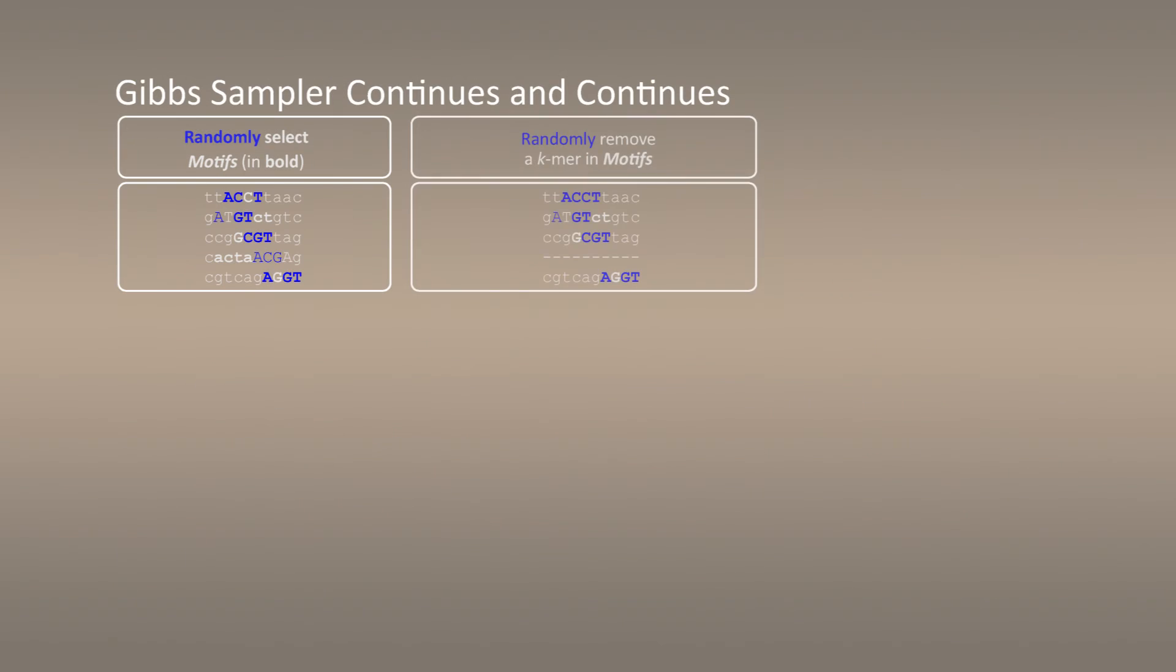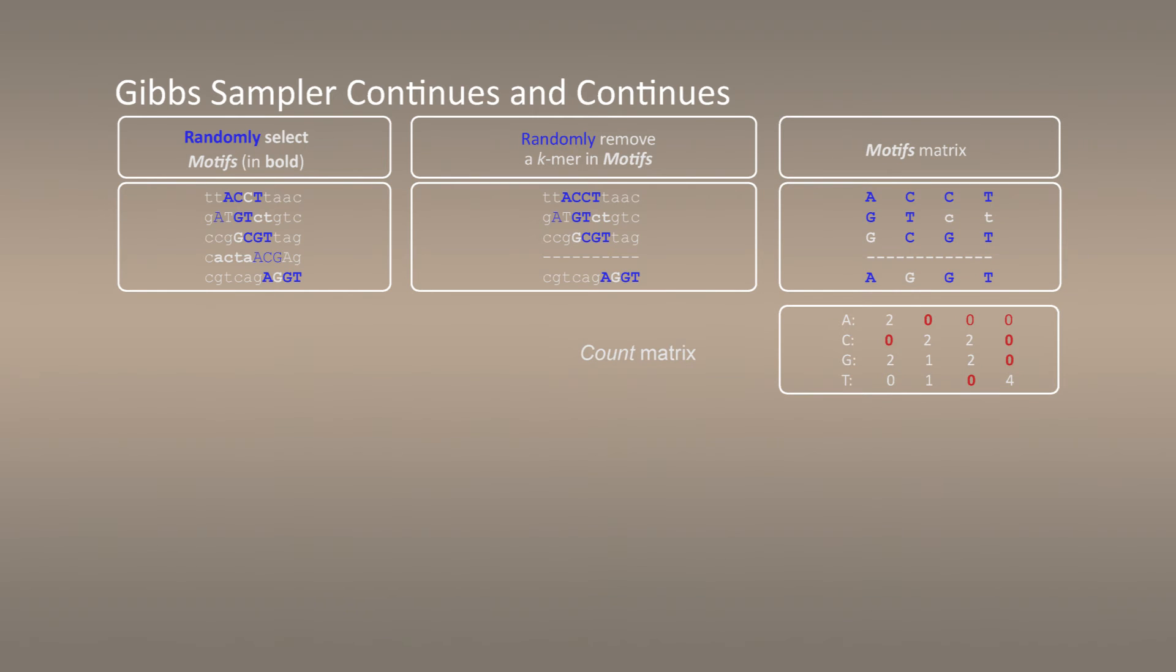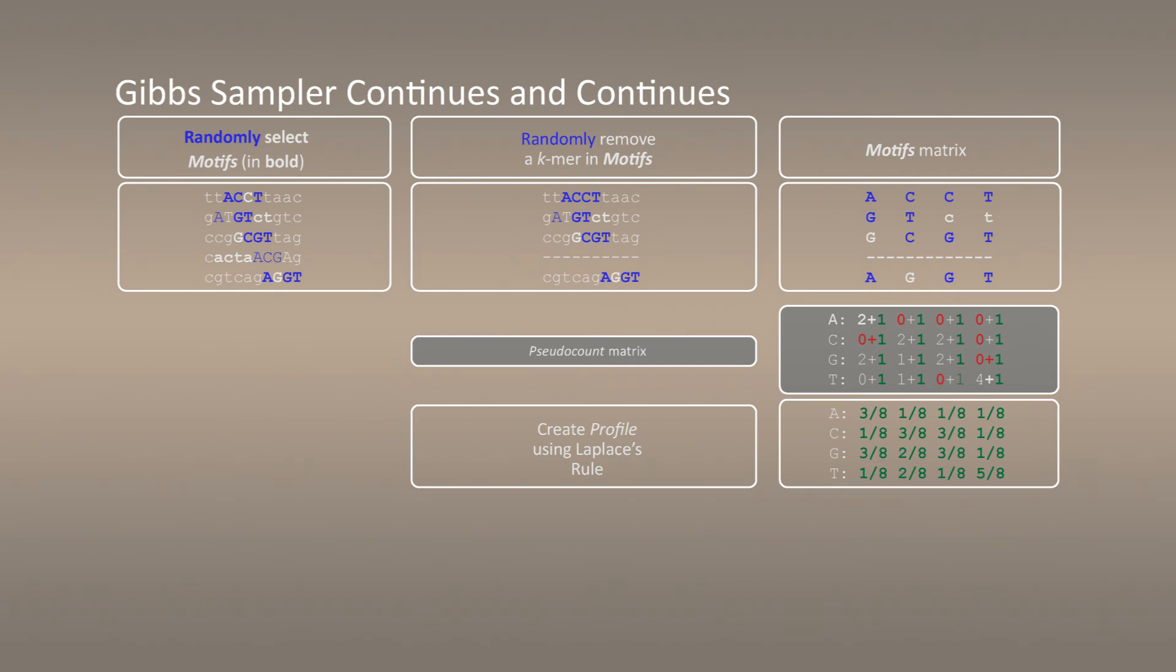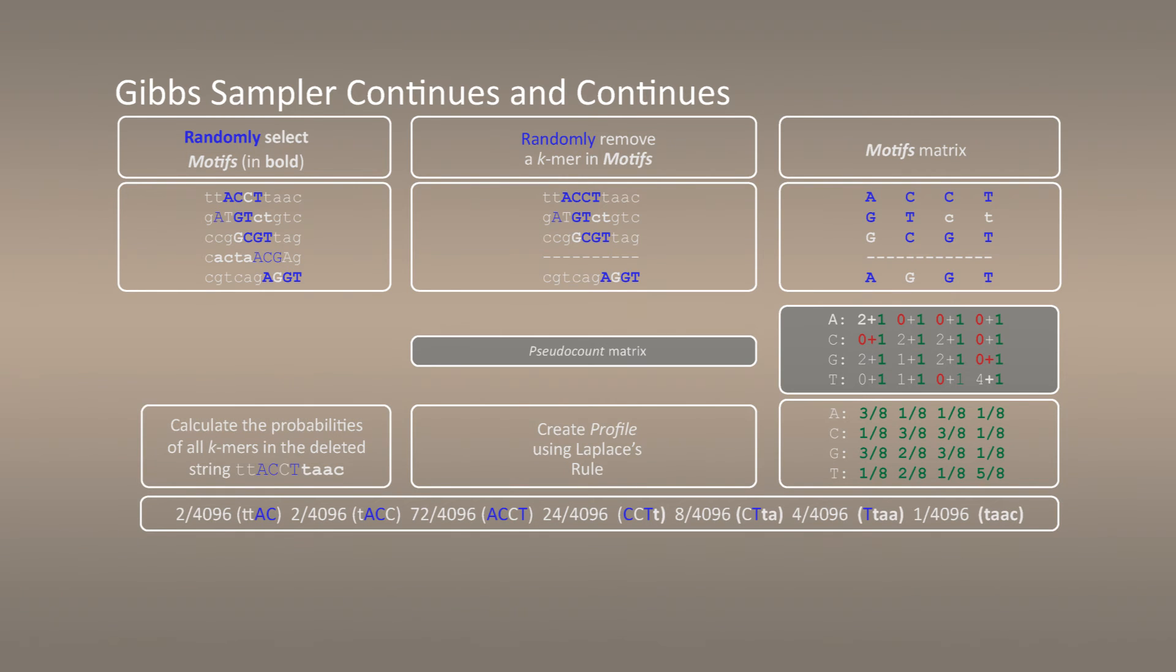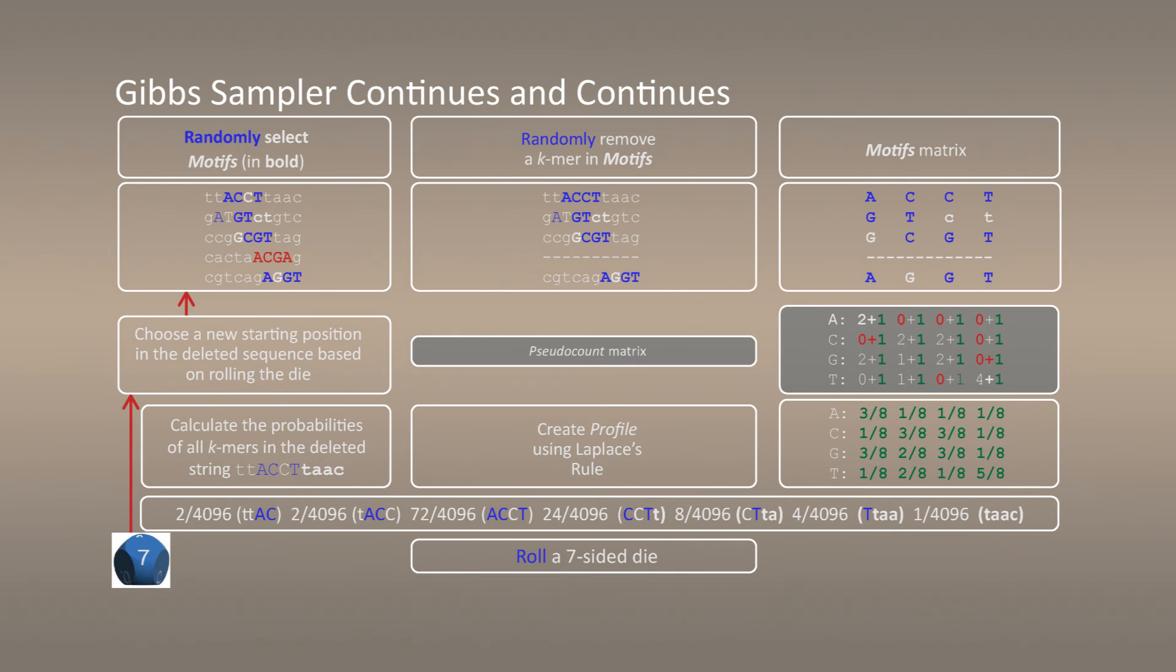Again, we randomly remove one of the sequences, construct count matrix, apply Laplace rule of succession, create profile, calculate probability, again roll seven-sided dice. Starting from completely random motifs, in just three iterations, we almost captured the correct implanted motifs, which means that the bias that the implanted motif introduced was correctly captured by Gibbs sampler and led us to the correct motif.